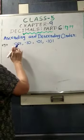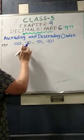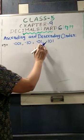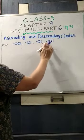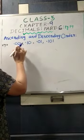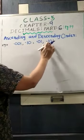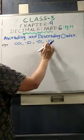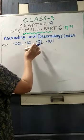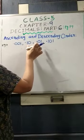Here you can see: the first number is 0.001, the second one is 0.10, the third one is 0.01, and the fourth one is 0.101. The first number is having 3 digits after the decimal, the second and third are having 2 digits, and the fourth number is having 3 digits. So we have to convert the second and third numbers into 3-digit numbers.